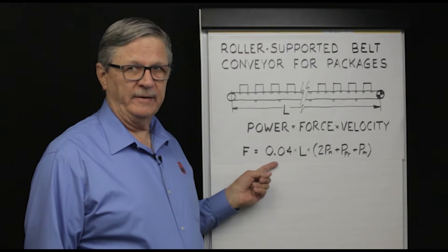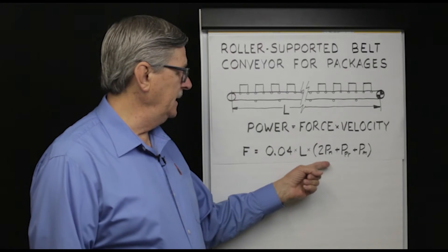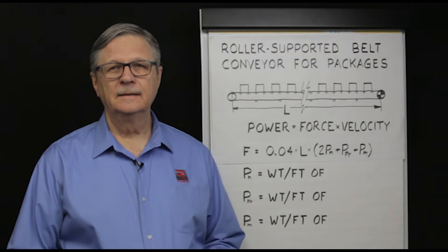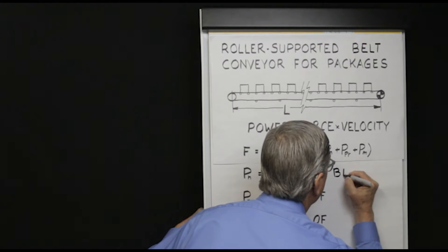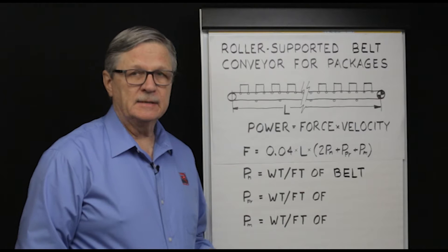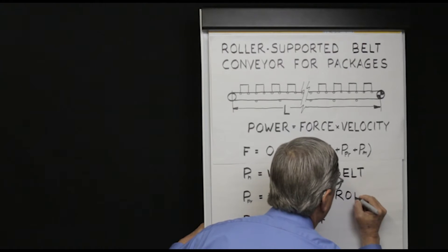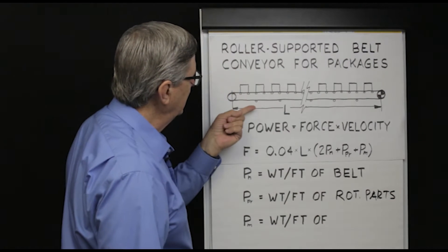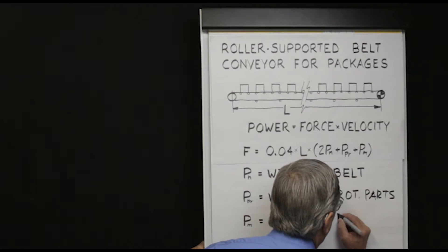We use three terms: PN, PPR, and PM. PN is defined as the weight per foot of the carrying-layer belt. PPR is defined as the weight per foot of the rolling stock, or the rotating parts — including the rollers beneath the carrying strand and the rollers beneath the return strand. And finally, PM is the weight per foot of the product to be handled.